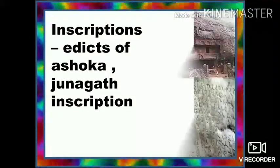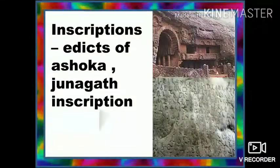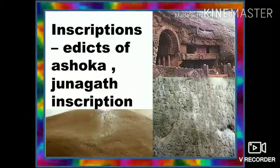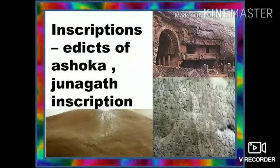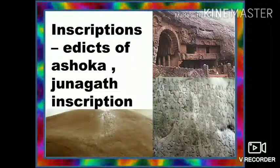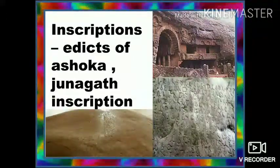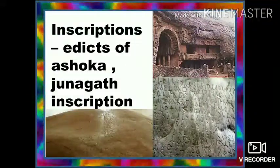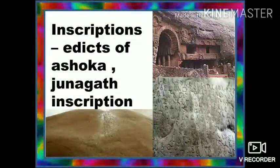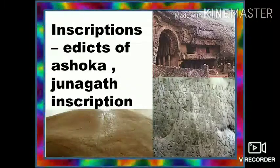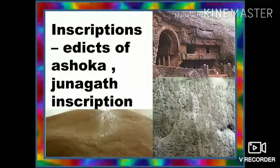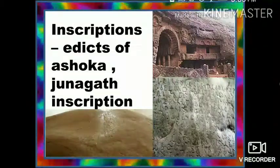Now let's see the Ashokan edicts. Inscription edicts of Ashoka include the Junagadh inscription. Ashokan edicts in the form of rock edicts, pillar edicts and cave inscriptions are found at different places in the Indian subcontinent. Now let's see some of the literary sources.